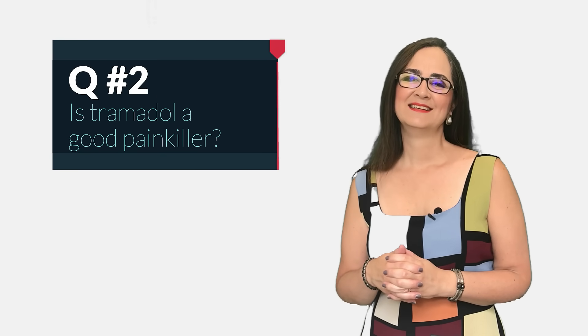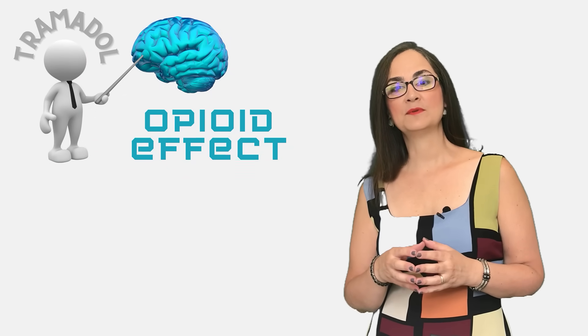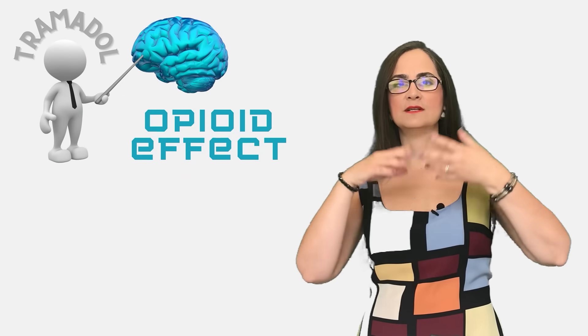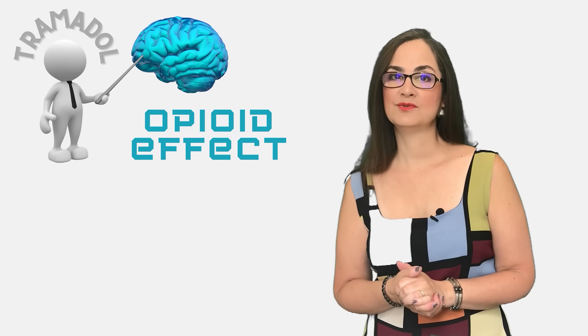Question 2: Is Tramadol a good painkiller? Tramadol and M1 will activate opioid receptors in the brain, spinal cord, and in the peripheral nerves, and will stop the pain. This is called analgesia.